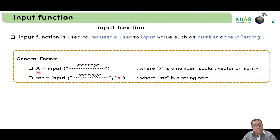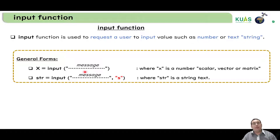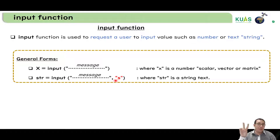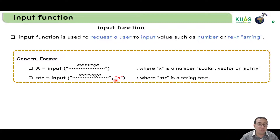We can give permission for the user to input a number. For example, we write x equal to input and then a message - this message will show on the screen so the user knows to input a value. Whatever value the user gives will be a number stored in x. But if we need to prompt the user to input a string - just text - we write the variable name, then input, then the message, but after the message we add 's' in double quotation marks. That means whatever the user inputs will be treated as a string.